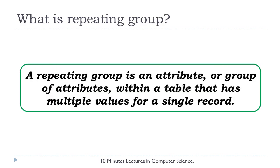By the term repeating group we refer to an attribute or group of attributes within a table that has multiple values for a single record. So in order to have a table normalized in first normal form, we need to eliminate these groups of attributes or multi-valued attributes.